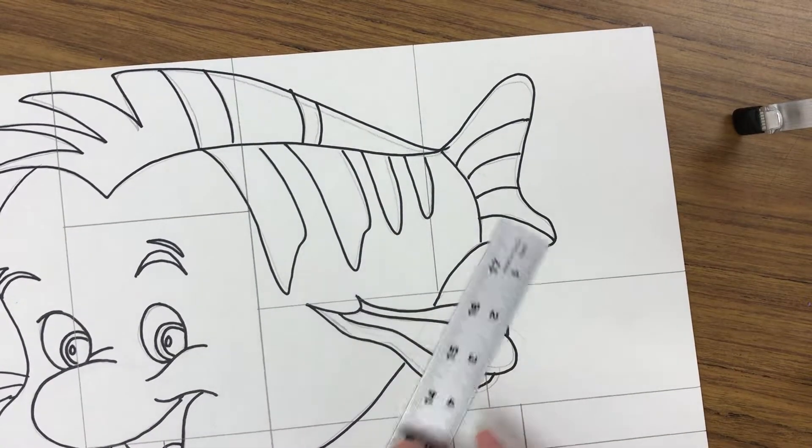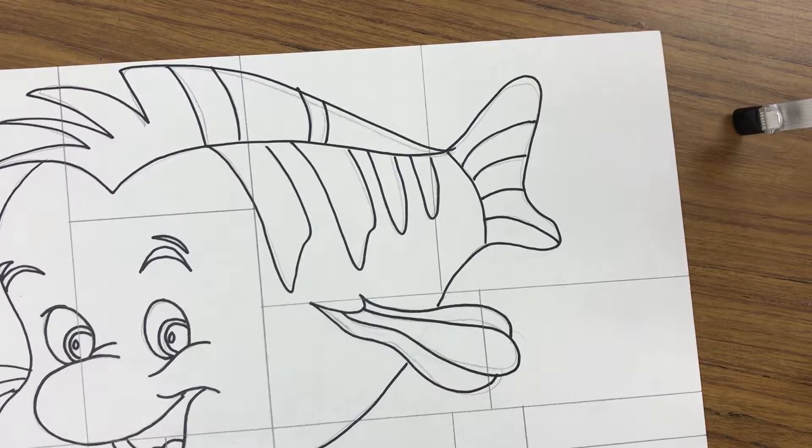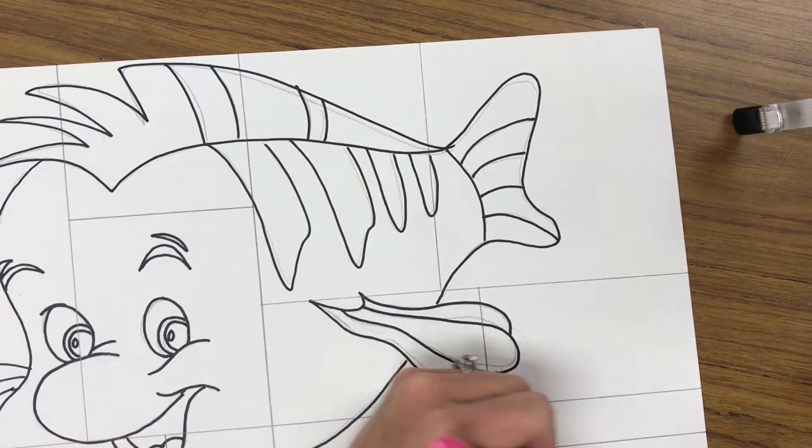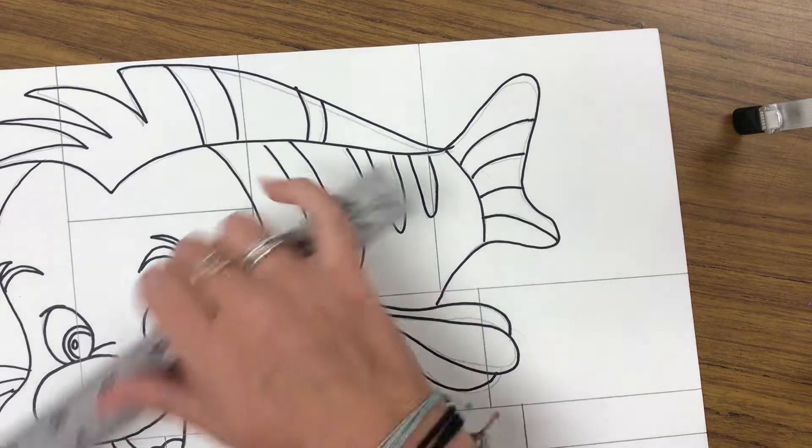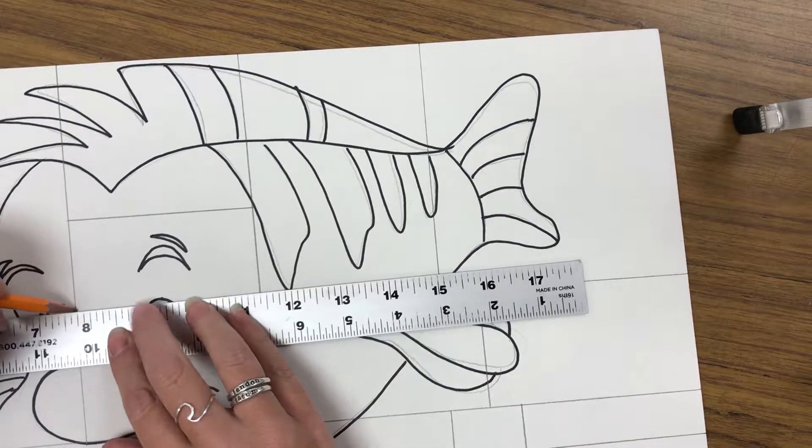Now, you don't want to get to the point where your squares are itty-bitty, teeny-tiny. You don't want to get to the point where your squares are gigantic. As you're going along, you want to really think about breaking up the individual spaces.